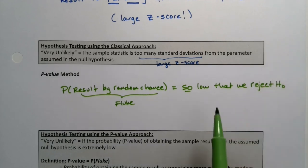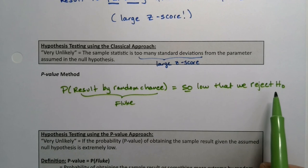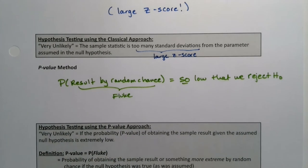We reject that it's a fluke and say it must be that the parameter is wrong. The parameter that was assumed to be true in H₀.